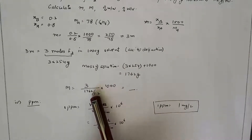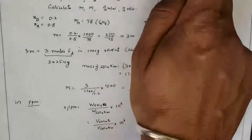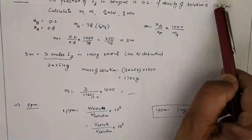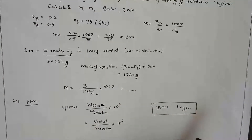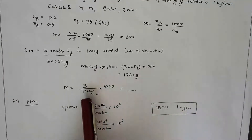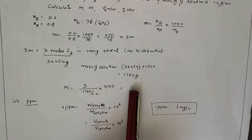To find molarity, we need the volume of solution. Volume = mass / density = 1762 / 1.2, which gives the volume in mL, then convert to liters. Using this volume, molarity = 3 moles / volume in liters.